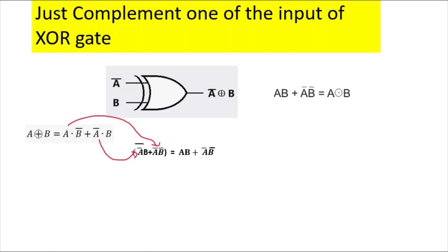Okay, these two double bar will be cancelled out and you will get AB + A̅B̅. So AB + A̅B̅. So this is your final function.